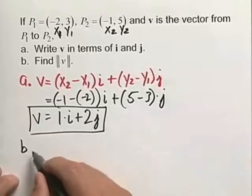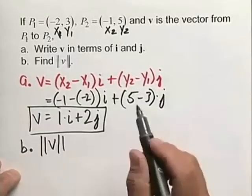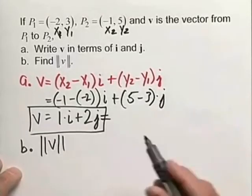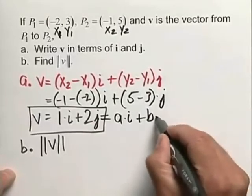Now for part B, we want to find the magnitude of this vector. And the nice thing about part A is we now have our vector in the form of a times i, plus b times j.